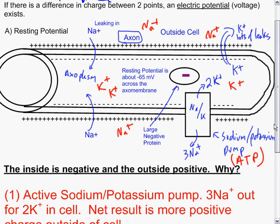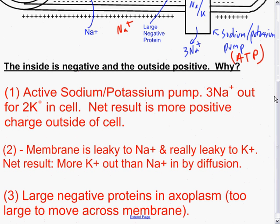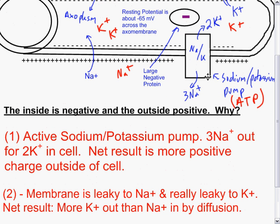There are three reasons for that. One being that there is an active sodium potassium pump that pumps three sodiums out for every two potassiums into the cell. We've diagrammed that here, so two potassiums in, three sodiums out. The net result is that we have more positive charge on the outside of the cell.